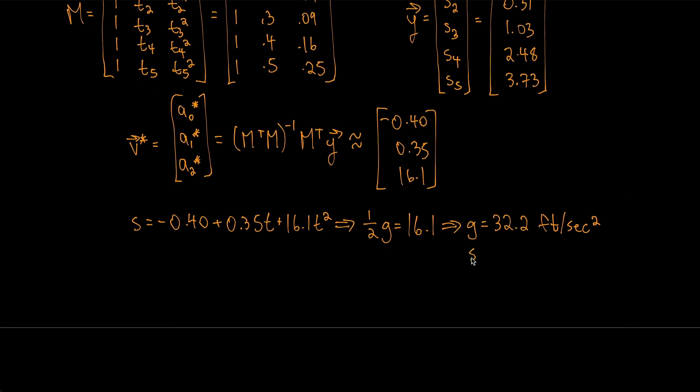So we have that S0 is a0*, that's -0.40 feet. That's just if you plug in 0 for time t. And we have V0 is a1*, our initial velocity would be 0.35 feet per second. That would be if you just look at the coefficient right over there.